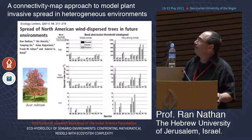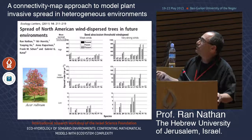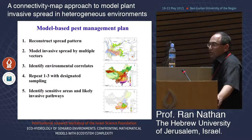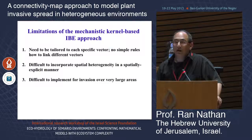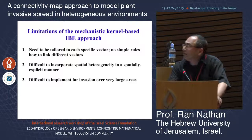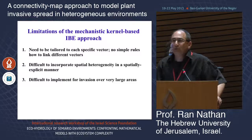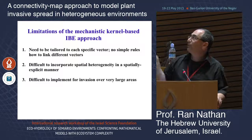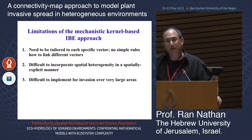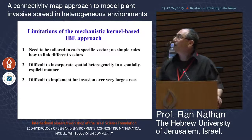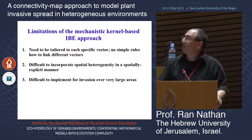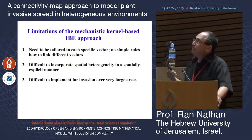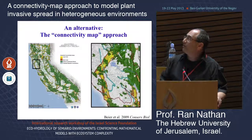Looking at different species, most will not reach these high spread rates — only a few, in very particular conditions. Going back to the original motivation: can we use the WALD model to simulate invasive species in China? Probably not, because while we have a good model for wind dispersal, dispersal by other vectors is still under development. And what do we do with a sequence of events in which a species is dispersed by multiple vectors throughout the invasion process? This is quite difficult to model with the dispersal kernel approach. Incorporating spatial heterogeneity in a spatially explicit manner for very large areas is also a major challenge.